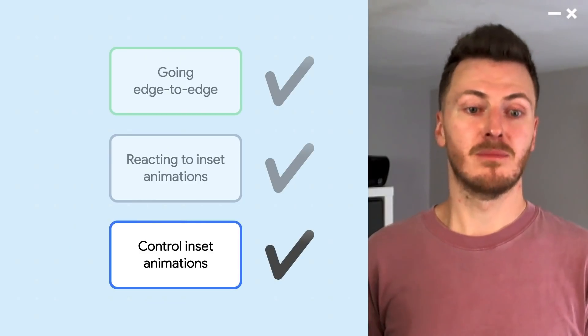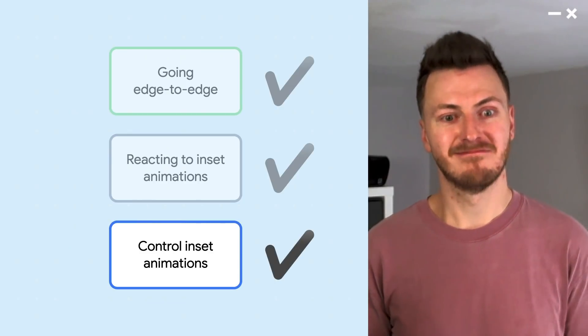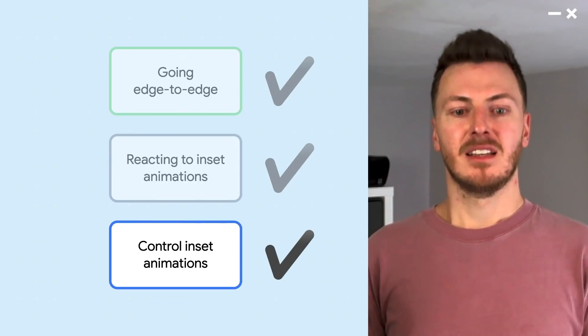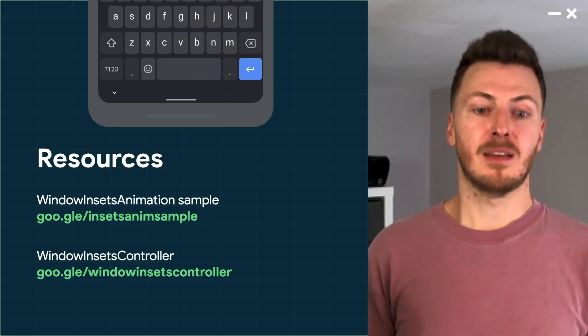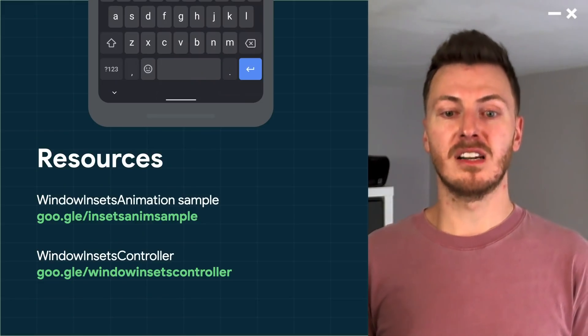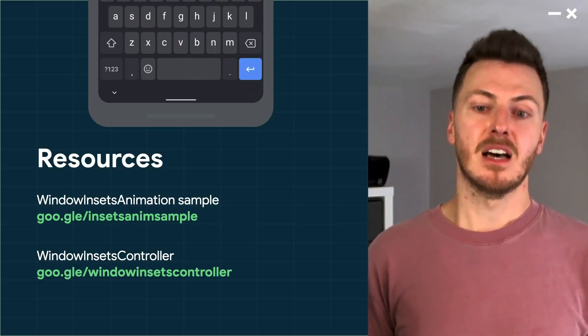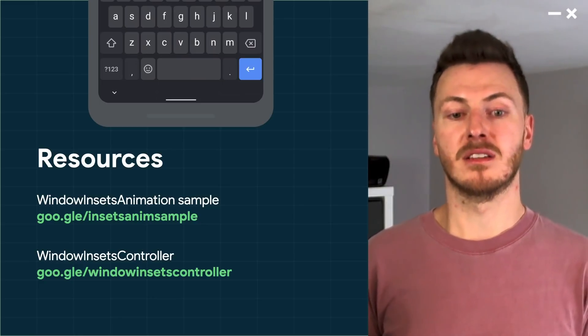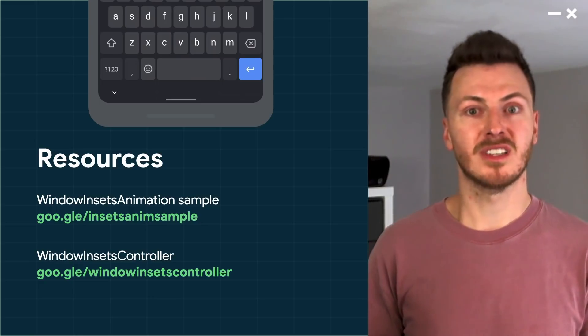So those are the three steps to implementing keyboard animations in Android 11. If you'd like to know more about the APIs covered in this video, I'd highly recommend looking through the sample app as well as documentation on the various new APIs. Thanks for watching.